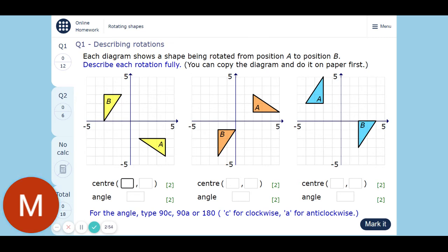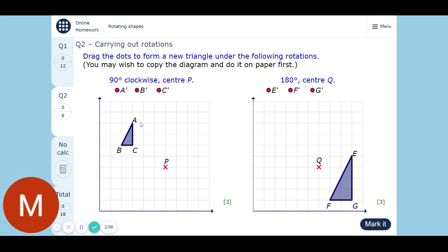All right, next one. So again, if you're careful with your tracing paper, you can do it over the screen, but don't press too hard. Just lightly draw over the shape, lightly hold down where it's got the center, rotate it 90 degrees clockwise, and then you can see where the new shape is meant to be. You can move your coordinates and check it by putting your paper back on.